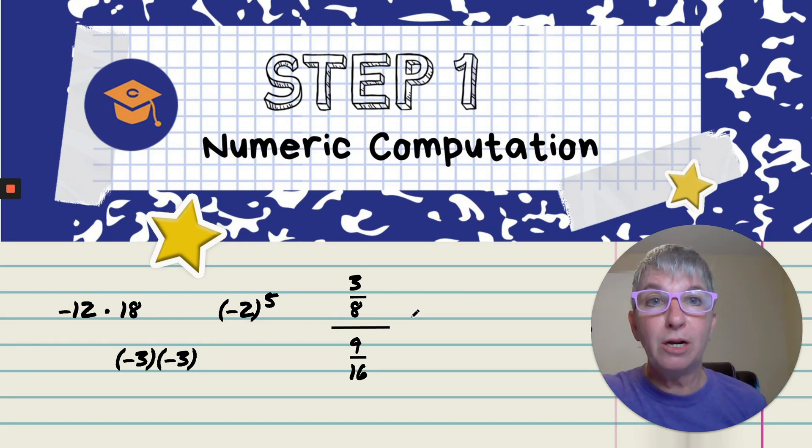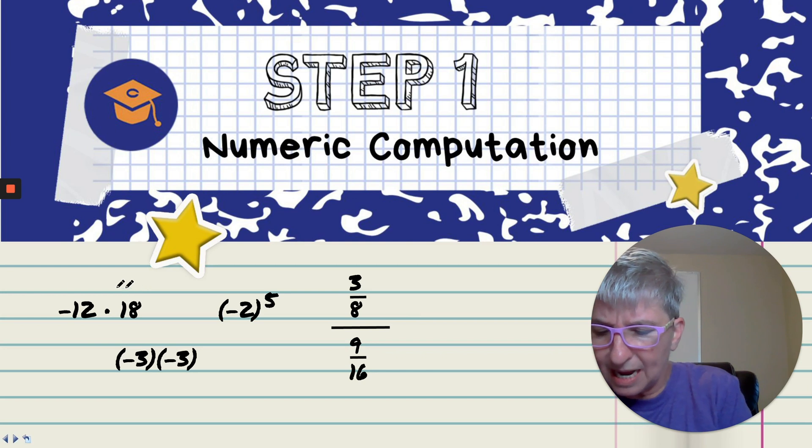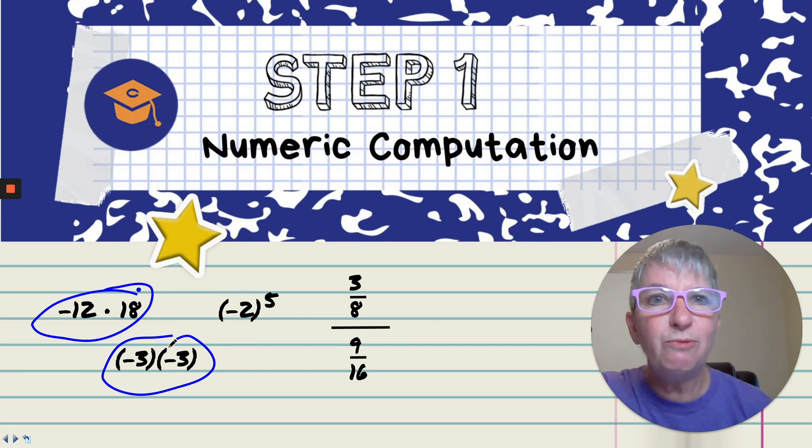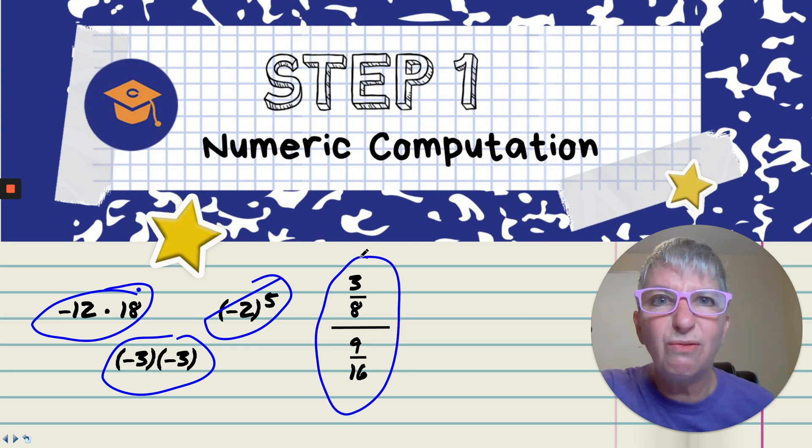Step one is numeric computation. So you're going to be multiplying with sign numbers. What are sign numbers, Julie? Well, they're just positive and negative. So look at that. You're going to be raising numbers to an exponent, also known as a power. You're going to be dividing and multiplying with fractions, otherwise known as rational numbers.